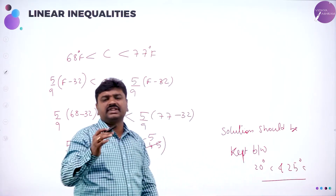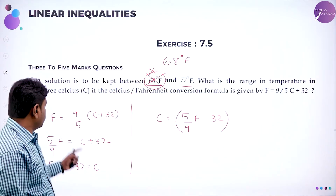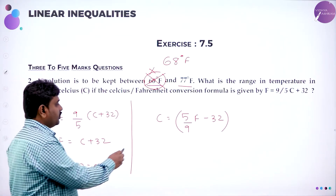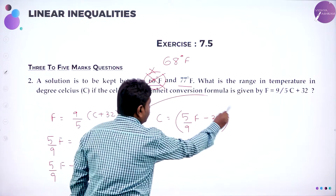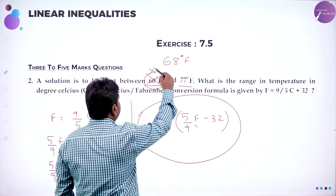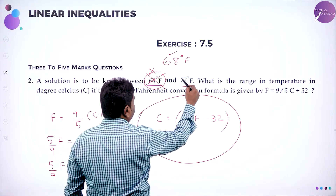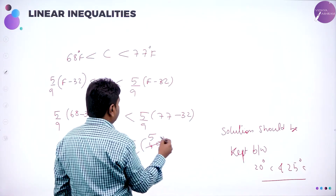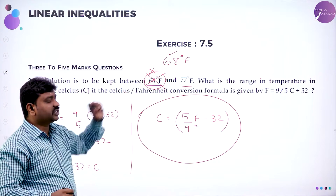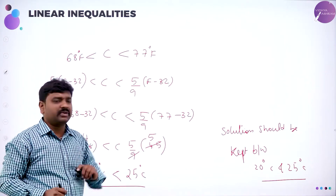So therefore the solution should be kept between 20 degrees Celsius and 25 degrees Celsius. See, this is such an easy question — everything is in the question. They gave F value, rearrange and get C value. In the place of F you put the lower limit 68, and in the place of F you put 77. But in your textbook they gave 68 degrees — it is 68 degrees — then your textbook answer matches.